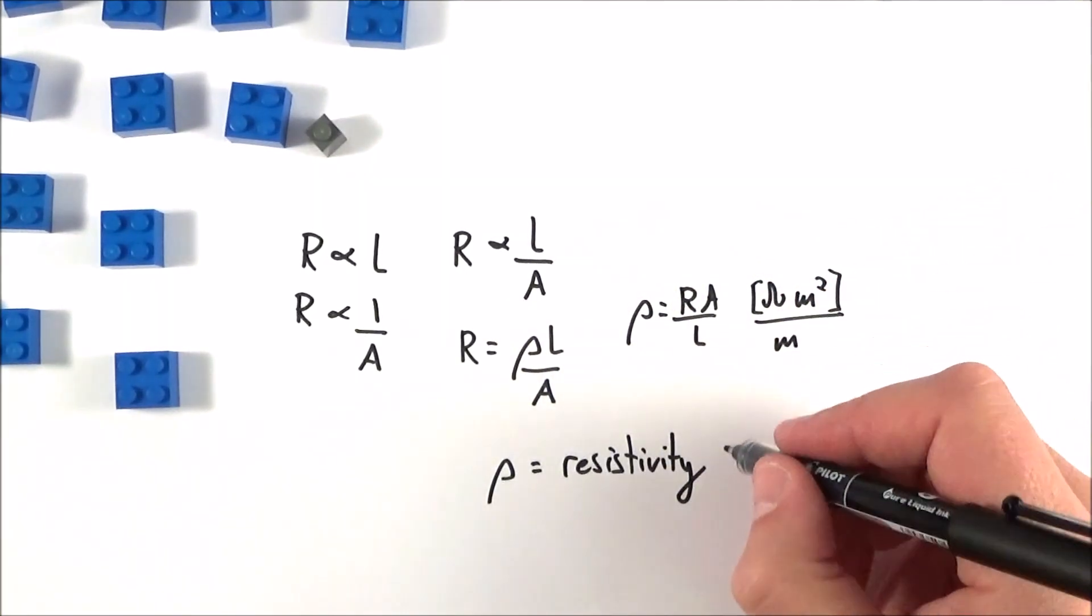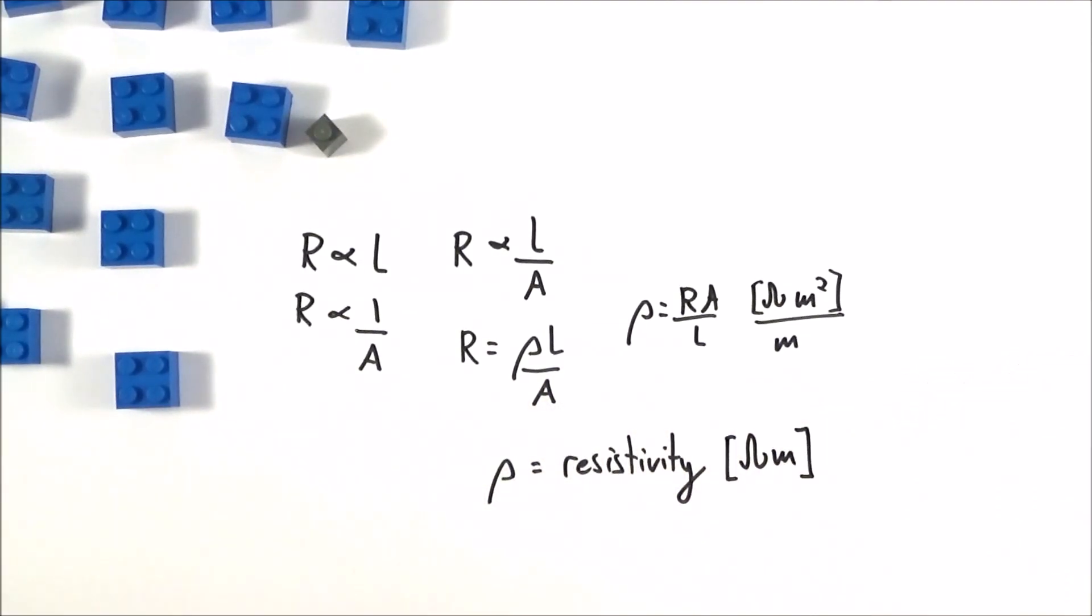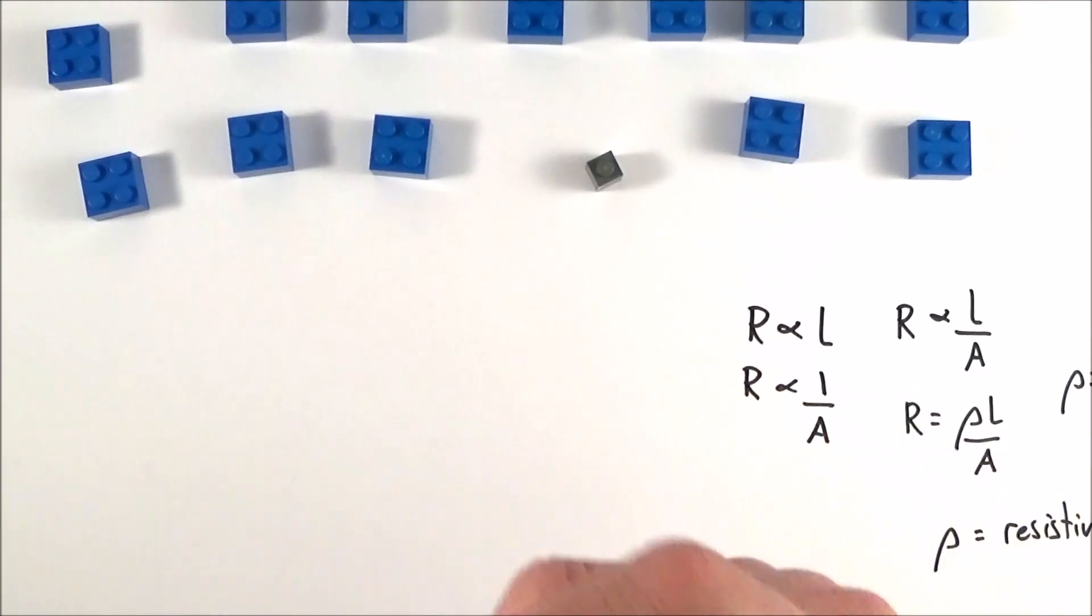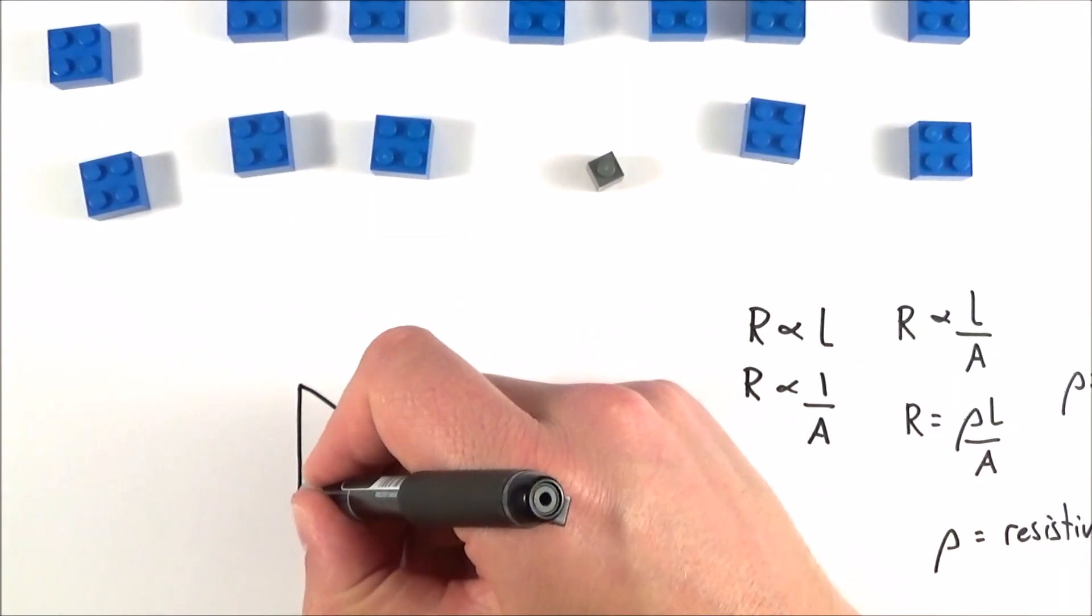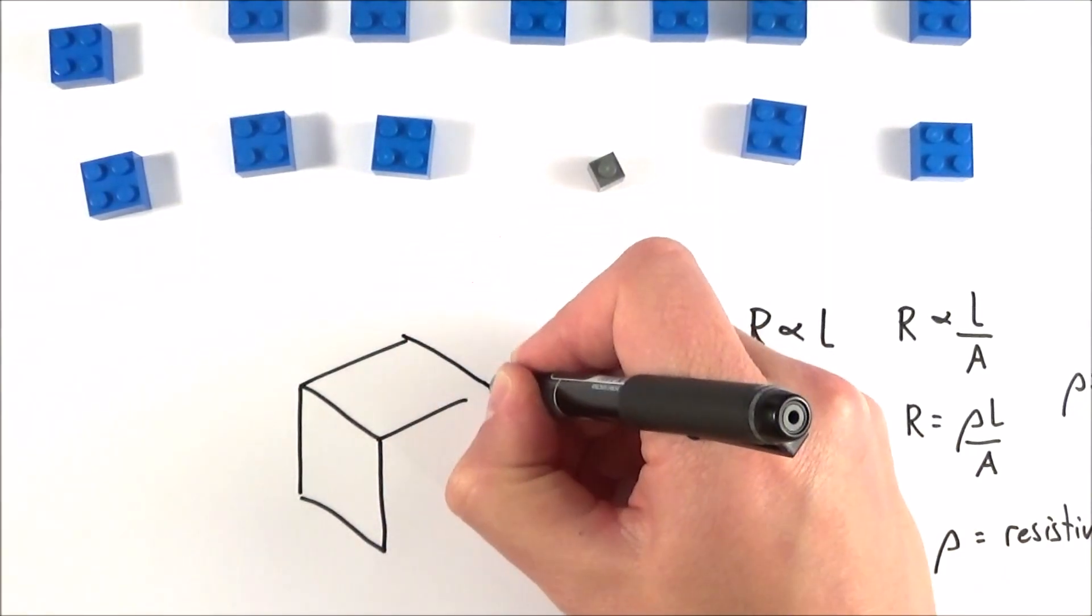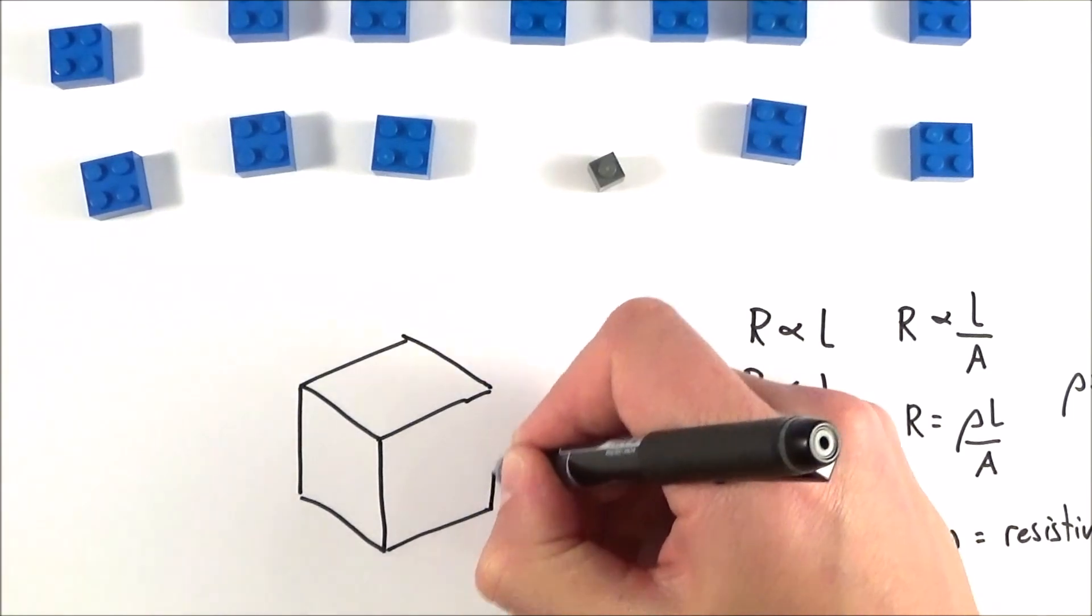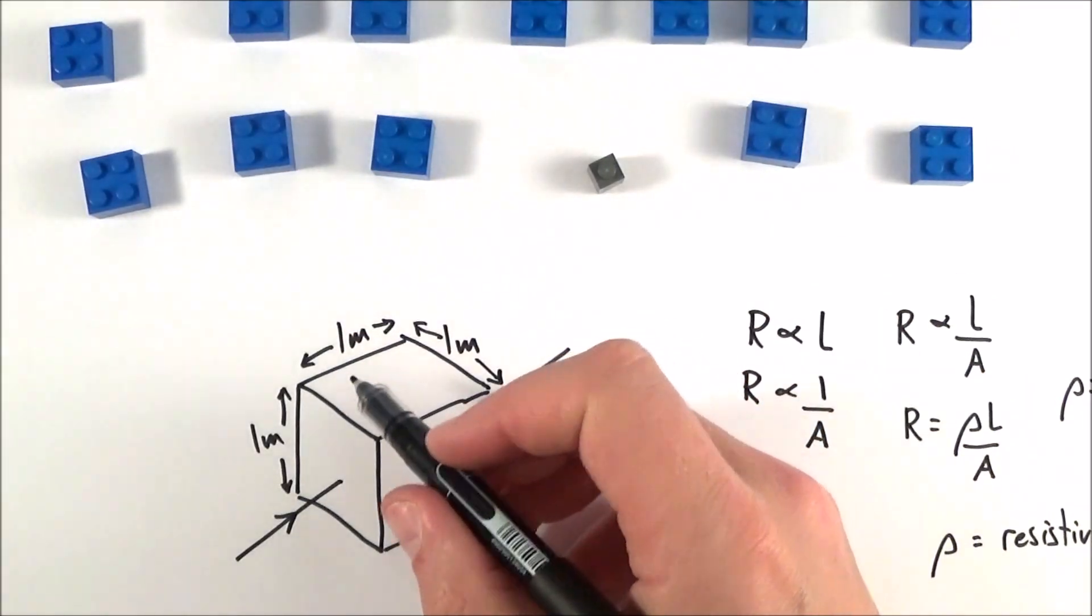So what does this mean? How can you visualize it? The way I like to think about it is if you had a cube of metal, perhaps some copper, and this cube was one meter by one meter by one meter.